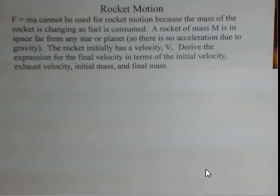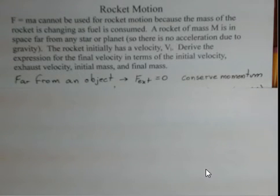We start out with some initial velocity, v sub i for the rocket, and we want to know what the final velocity is based on this initial velocity, based on the exhaust velocity of the fuel, type of fuel we're using, based on the initial mass and final mass of the rocket.